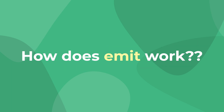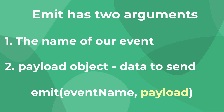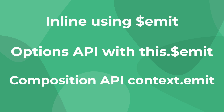So how does VueEmit work? Each VueEmit call can have two arguments: the event name, which is the name that we can listen to in our parent component, and a payload object, which is data that we want to pass with the event. This payload is optional if you don't want to pass any data. There are a couple different ways to use VueEmit in your code — the three we'll be looking at are inline, the options API, and the composition API.